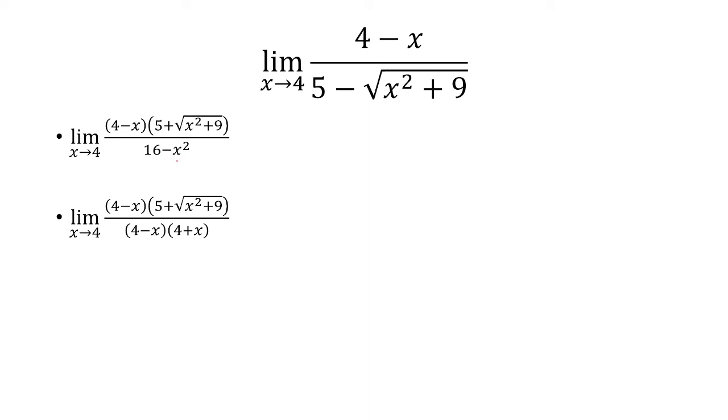So I factor the denominator into 4 minus x and 4 plus x. The 4 minus x are going to cancel. So I'm left with 5 plus the square root of x squared plus 9 over 4 plus x. I plug in 4.